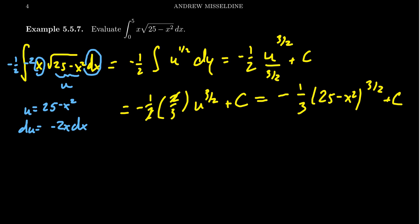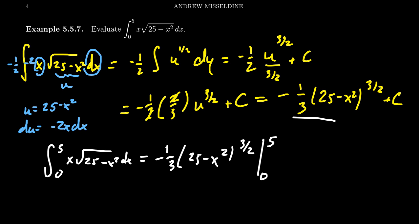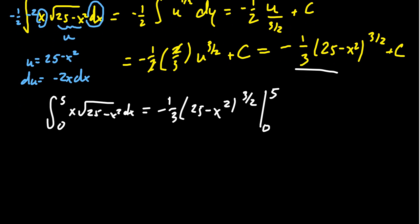To evaluate the definite integral from 0 to 5, x times the square root of 25 minus x squared dx, we need to find an antiderivative, which we have now. We get negative 1 third, 25 minus x squared to the 3 halves, evaluated from 0 to 5. You don't have to worry about the constant when you do these definite integrals.